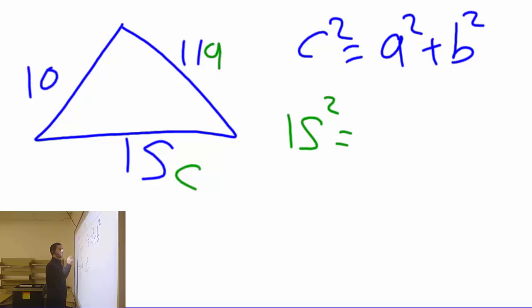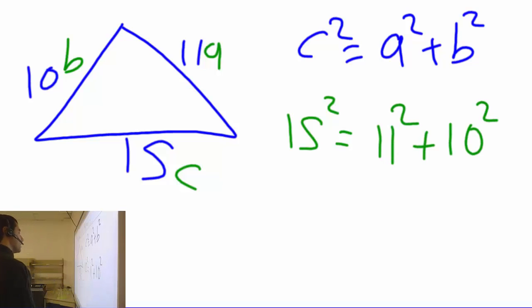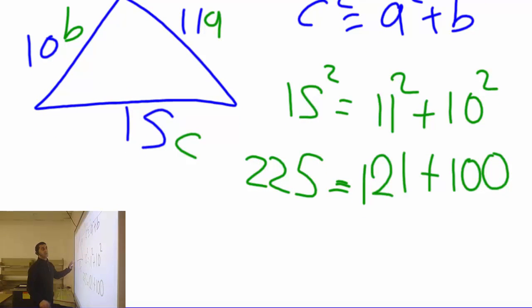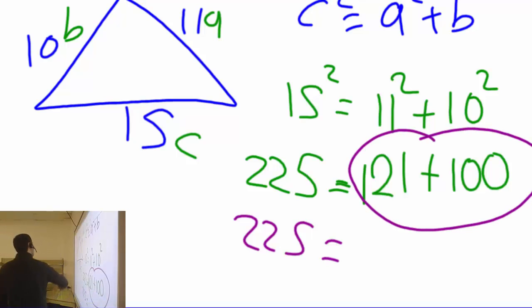And the C here is - I don't have the 90 degree, but it's supposed to be the longest one. Therefore I know this is C. Let's write this down: 15 squared equals - A and B never matters - let's call this A, let's call this B - 11 squared plus 10 squared. 15 squared, calculate. 225. And 11 squared, calculate. 121. 10 squared? 100. This looks weird. Watch this part carefully: let's put these two numbers together and you will get 221.